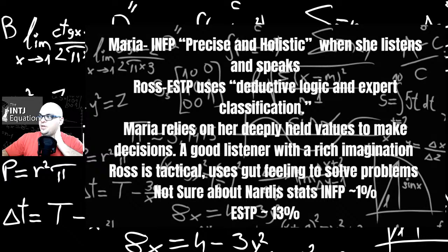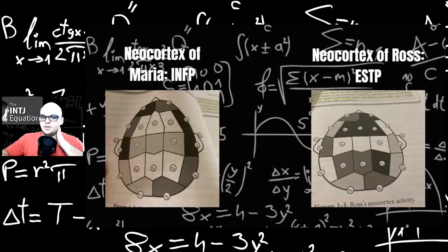Maria, an INFP, is precise and holistic when she listens and speaks. Ross, an ESTP, is decisive with deductive logic and expert classification. Maria relies on her deeply held values to make good decisions, is a good listener with a rich imagination. Ross is tactical, uses gut feelings to solve problems. Not sure about Nardi's statistics here, but he says INFPs are 1% and ESTPs are 13%. ESTPs probably pretty accurate, but the INFPs are not that rare. They're fairly common, probably about five or six percent in my opinion. We don't know the true statistics because there's so much mistyping out there and we can't agree on one system.